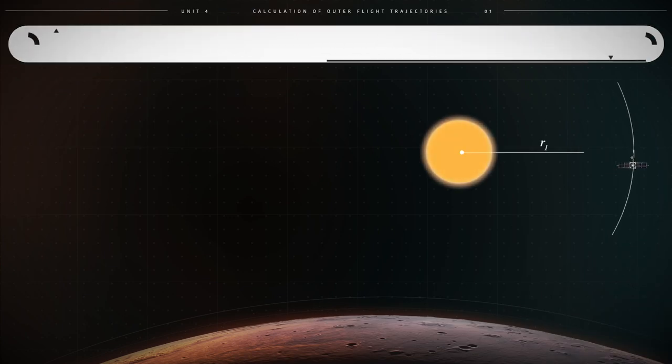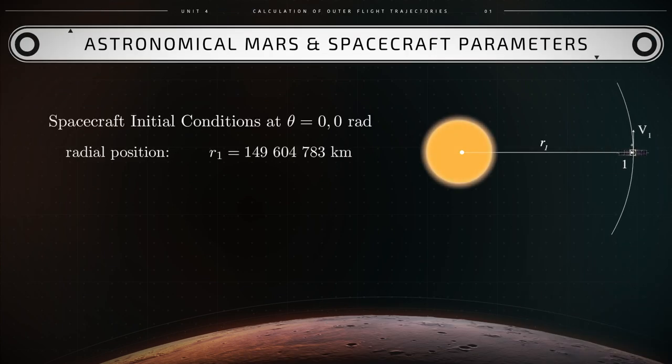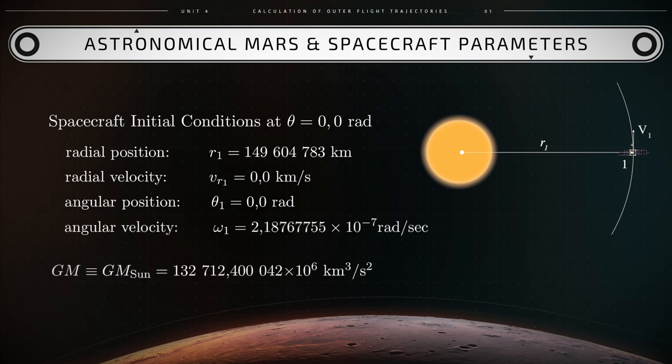They correspond to departure from point one in the Hohmann transfer orbit. r one equals 149 million 604 thousand 783 kilometers. vr one equals zero kilometers per second. theta one equals zero radians. The gravitational parameter gm is the gravitational parameter of the Sun. It has a magnitude of 132 billion 712 million 440 thousand 42 kilometers cubed per second squared.